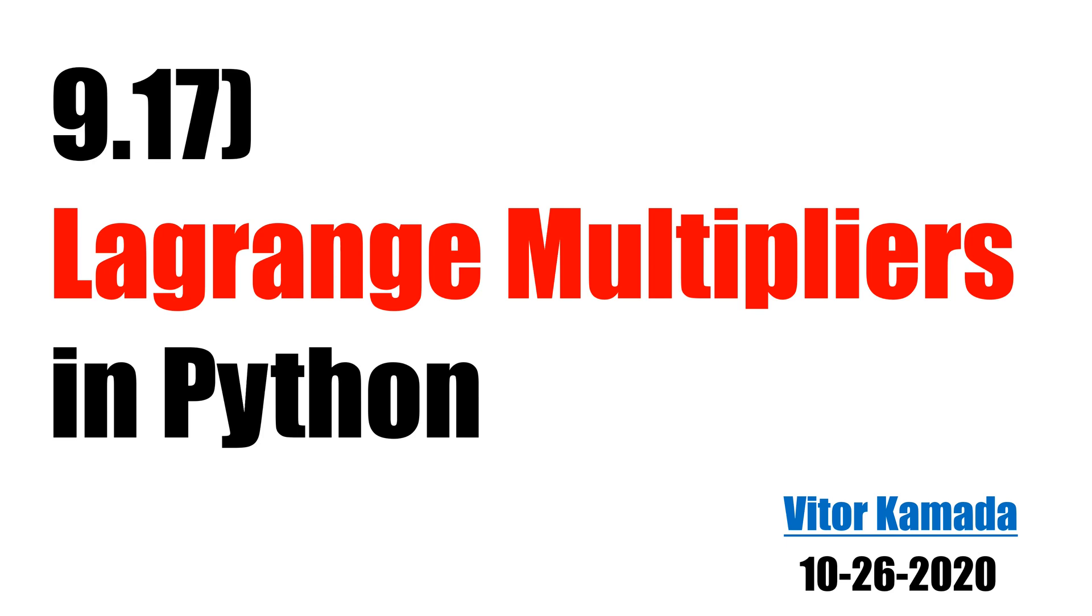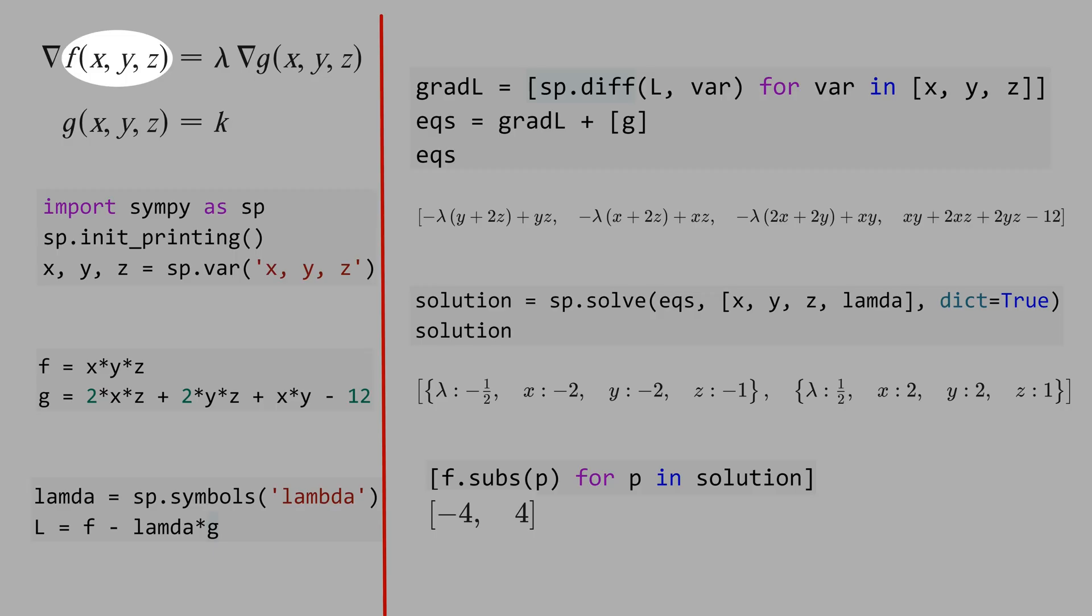Let's learn how to solve optimization problems. Suppose we want to optimize the function f, and f equals x times y times z.